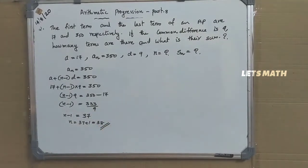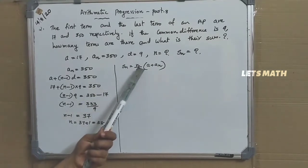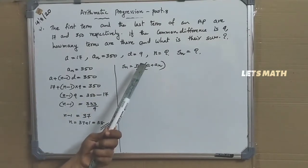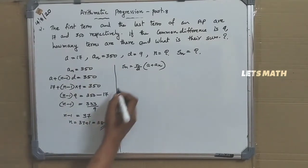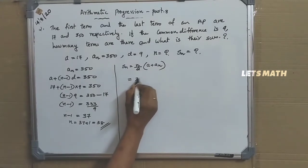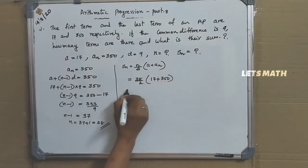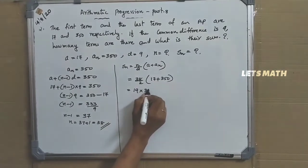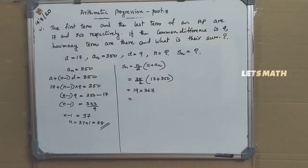Now we have to find SN, that is S38. We use SN equal to N by 2 into A plus AN, since both first and last terms are given. So it is 38 by 2 into 17 plus 350, that is 19 into 367. 19 into 367 equals 6973.